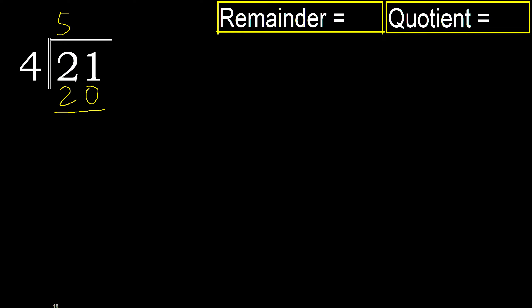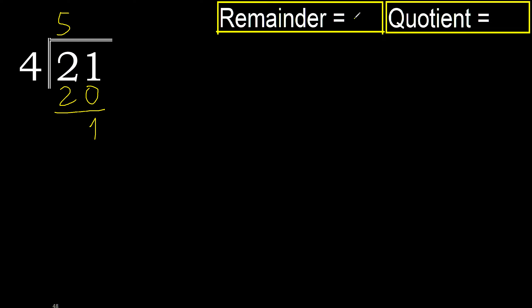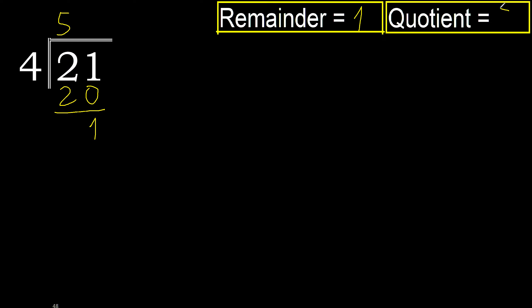21 minus 20 is 1. Next — that is not a number, therefore finish. The answer is 5, remainder 1.